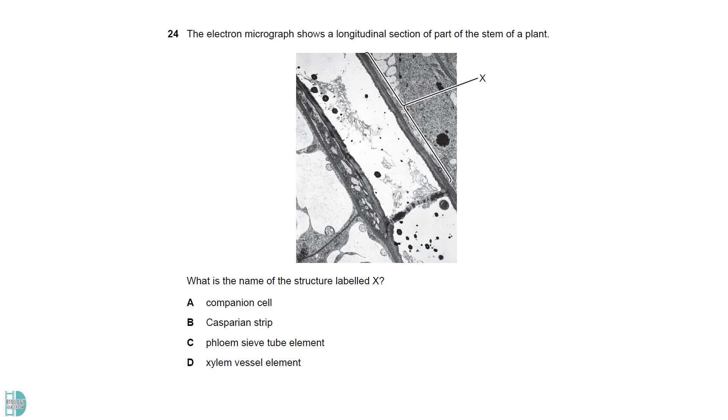The cell in the photo is mostly emptied in the middle and has peripheral cytoplasm. There is an end plate with pores between it and the next cell. These are the features of the phloem sieve tube.